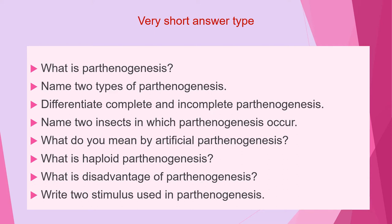Next question is: what do you mean by artificial Parthenogenesis? Next is: what is haploid Parthenogenesis? Next is: what is the disadvantage of Parthenogenesis? And the last question of this category is: write two stimuli used in Parthenogenesis.